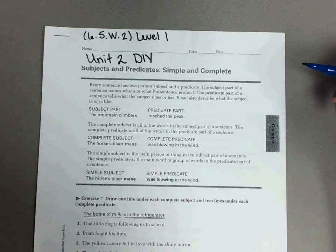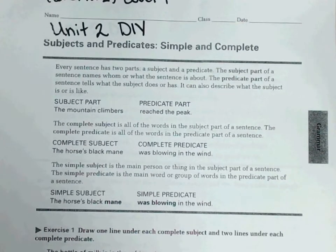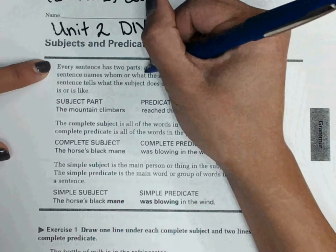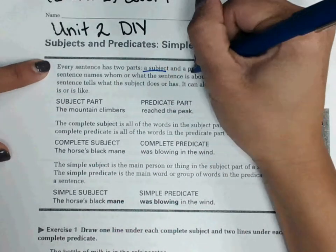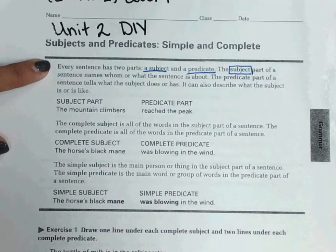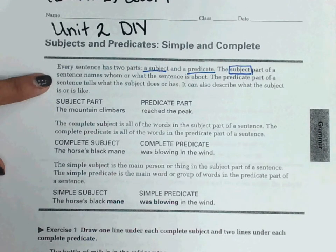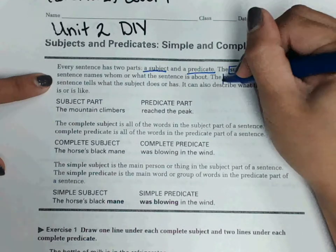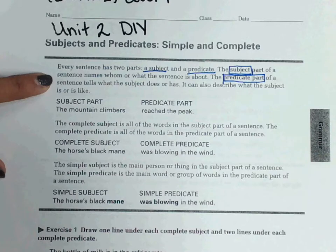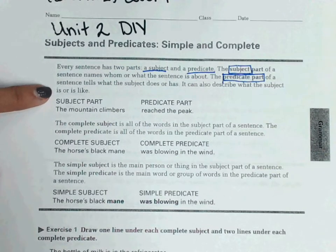It says every sentence has two parts: a subject and a predicate. The subject part of a sentence names whom or what the sentence is about. The predicate part of a sentence tells what the subject does or has. It can also describe what the subject is like or is.